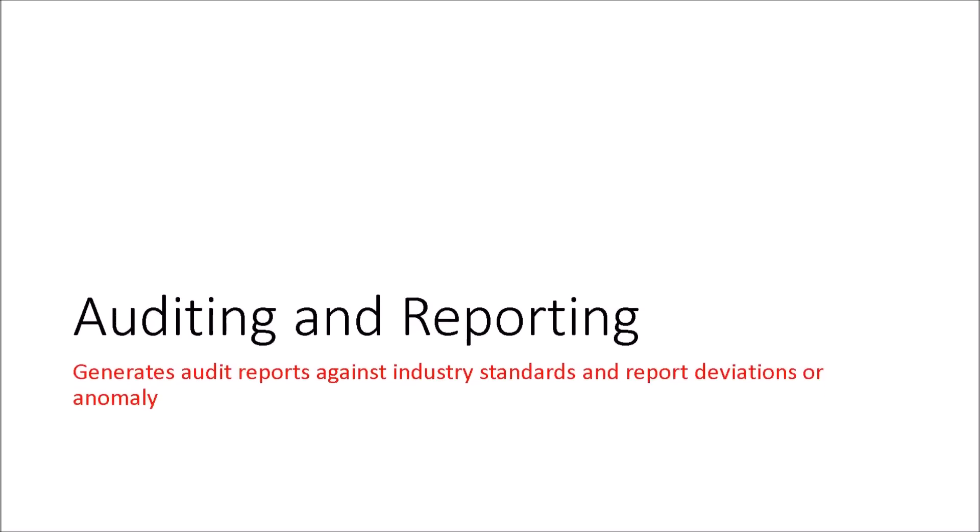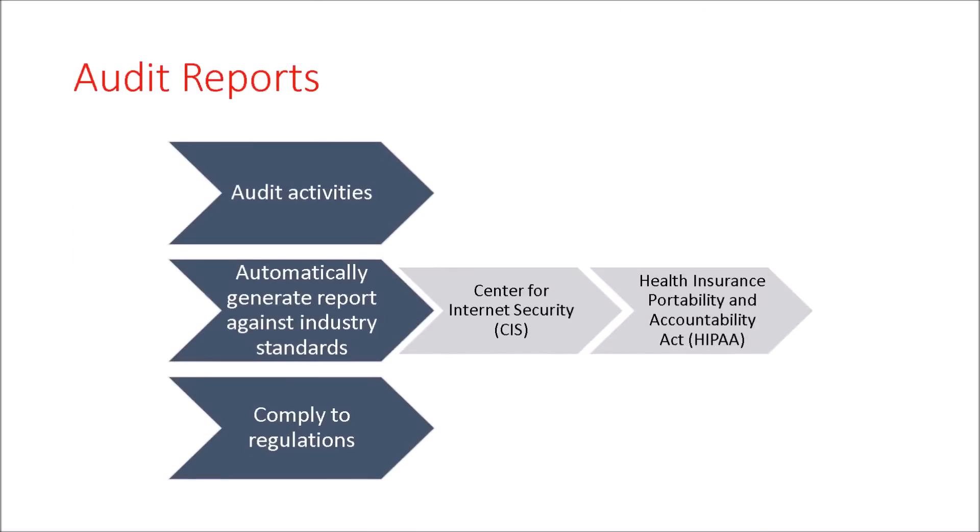On auditing and reporting: many enterprises need to comply with industry standards or regulations to maintain trust with customers. Standards like CIS (Center for Internet Security) or HIPAA (Health Insurance Portability and Accountability Act) for healthcare apply here. We want to audit activities of privileged accounts, identify changes being enforced in the environment, and detect anything out of compliance. Automated processes flag anomalies quickly, allowing us to enforce security policies without impacting the systems in question.